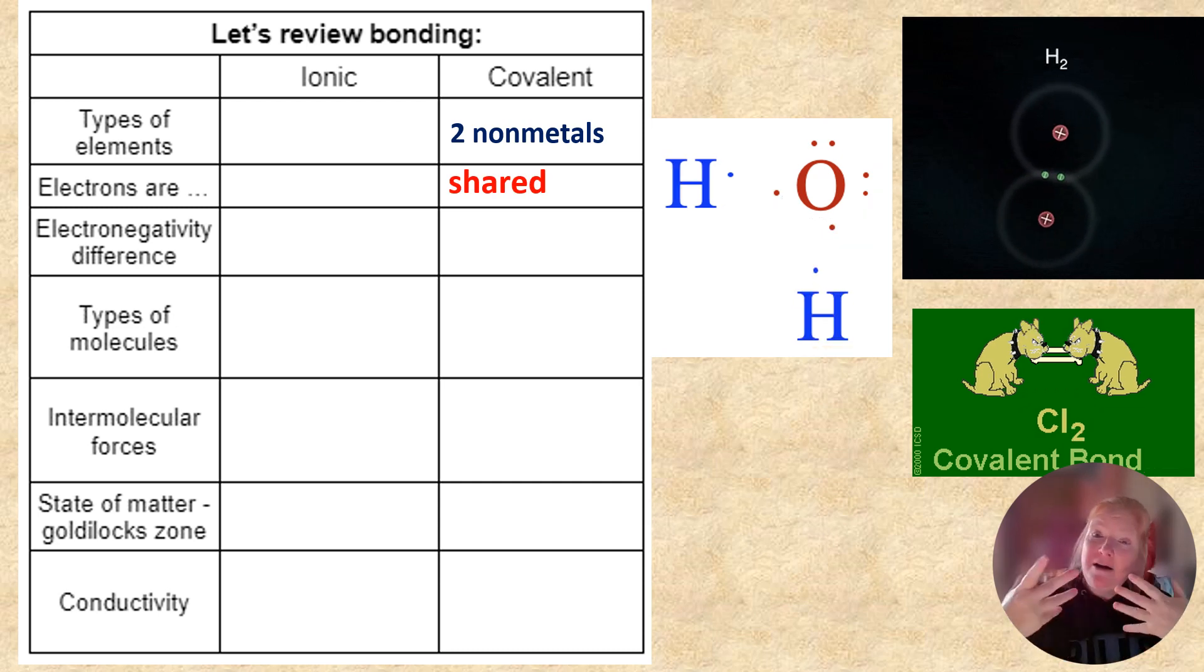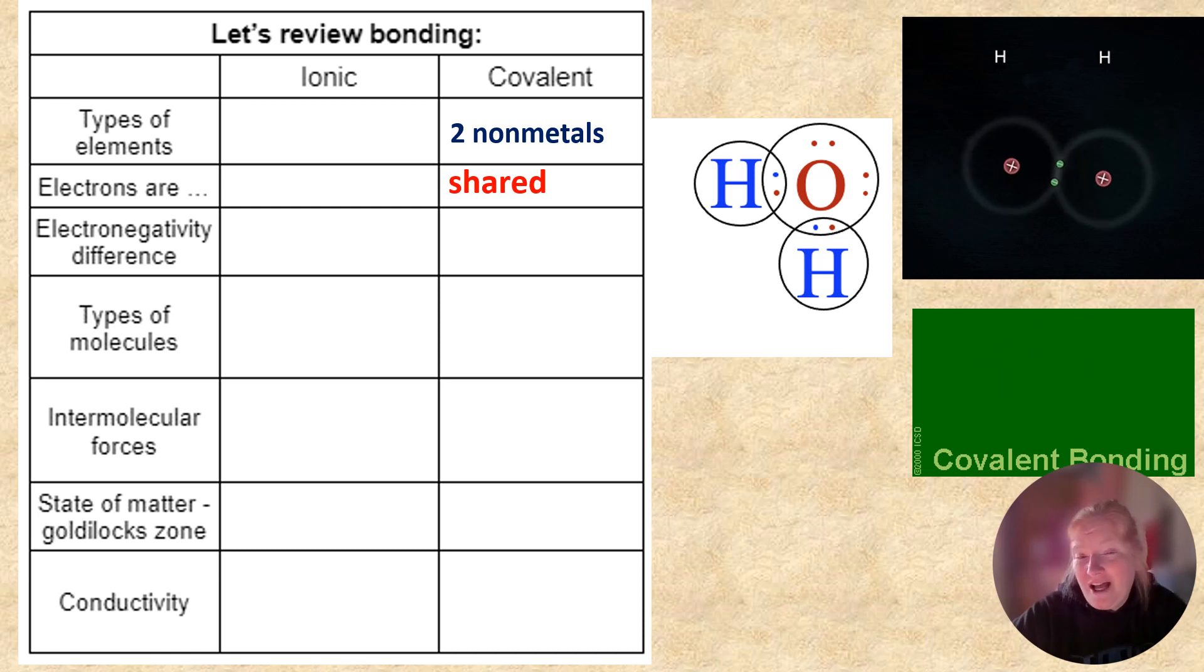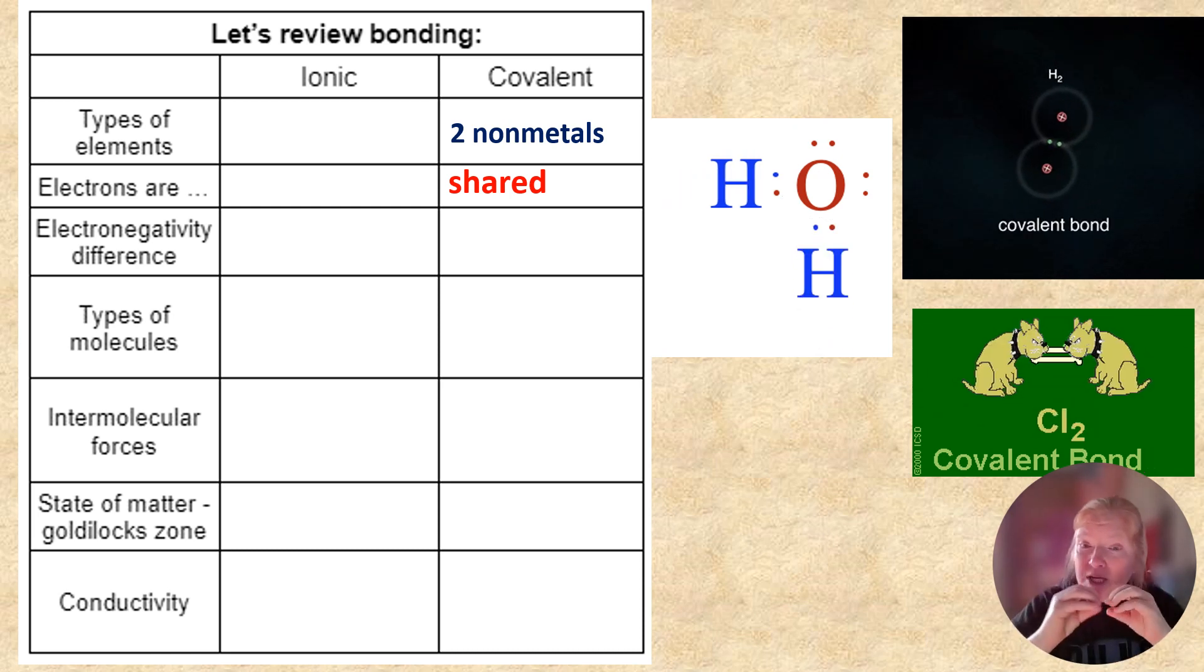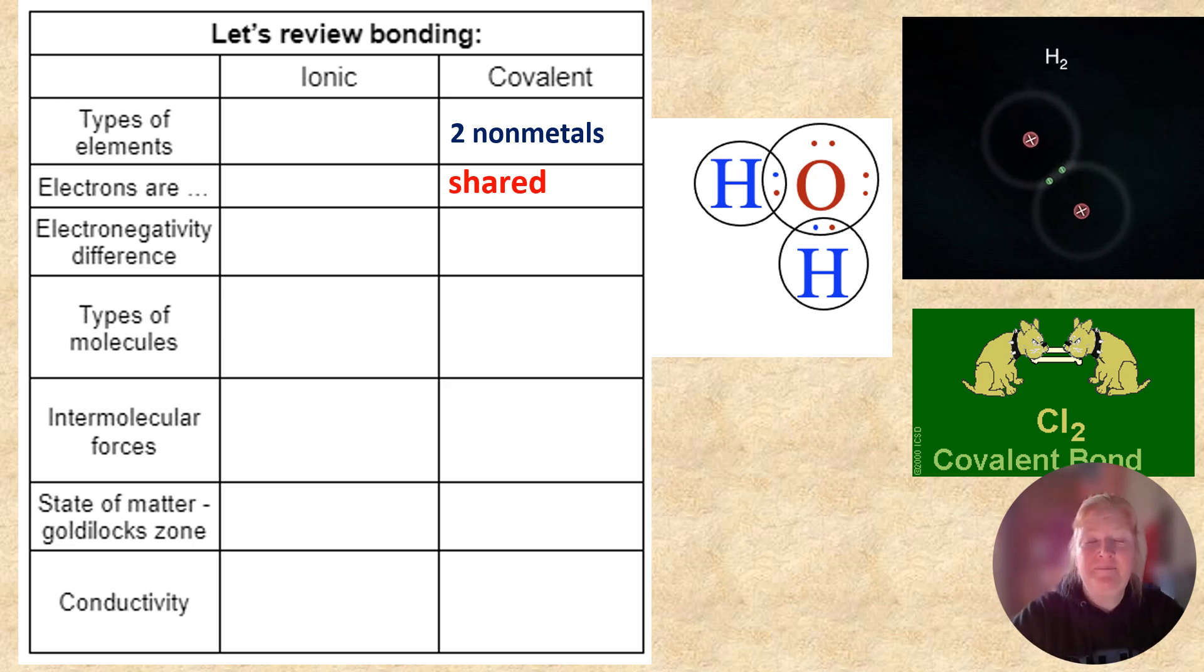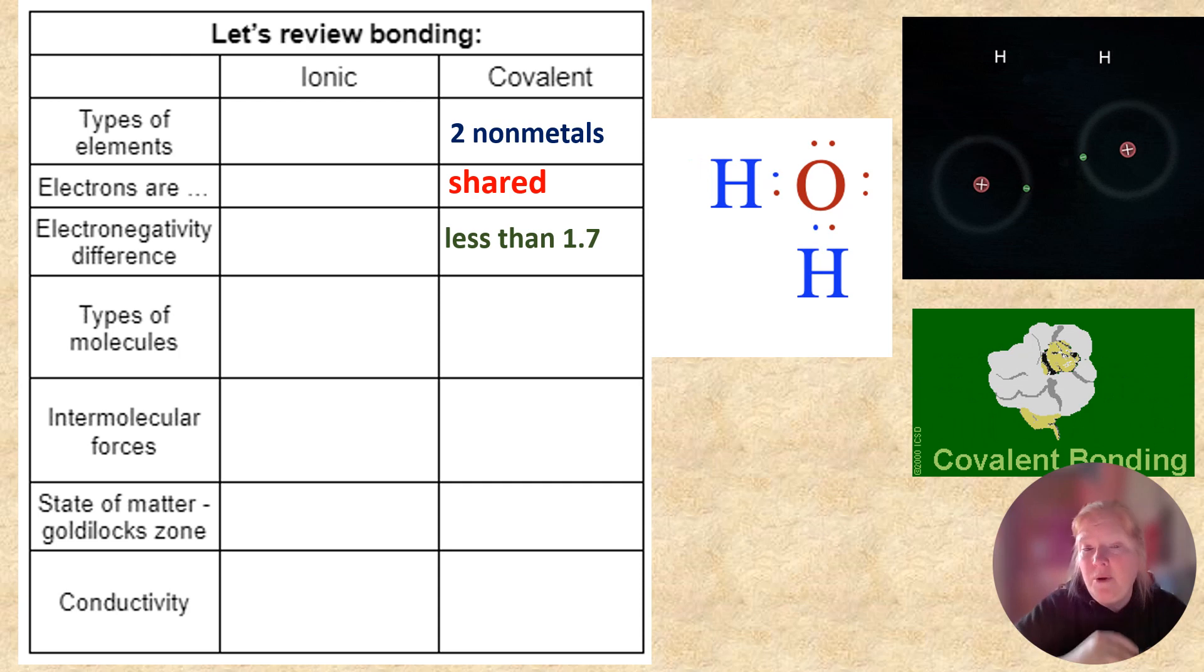The electrons this time are shared. So you can see in the GIF with the dog, the electrons represented by bones are being shared. They're located in between the two of that. The electronegativity difference this time is less than 1.7.